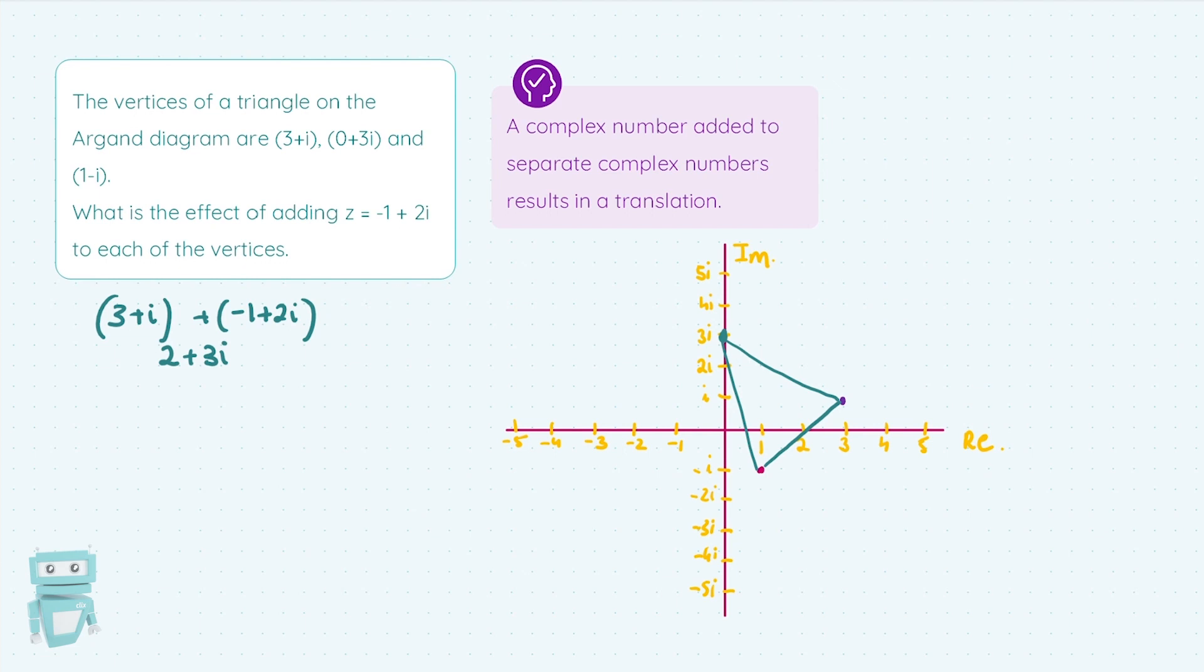So again, I've translated that across, and we'll put a purple dot there because that's what we did for the original 3+i. So 2+3i, there she is there.